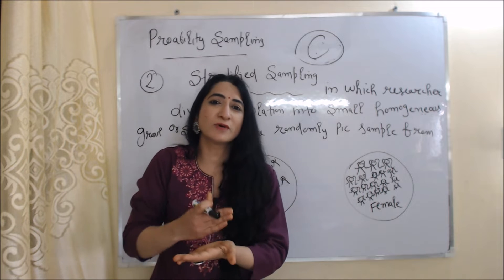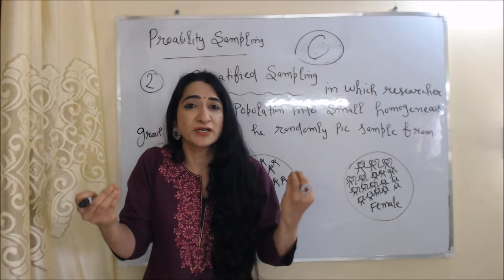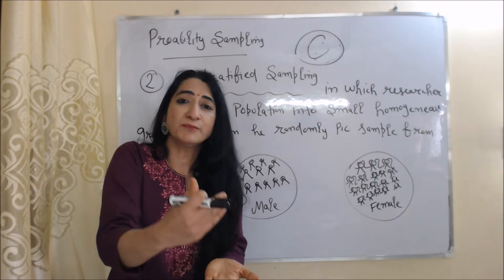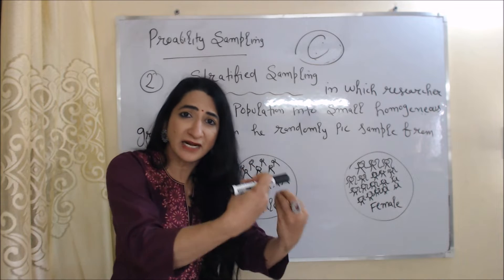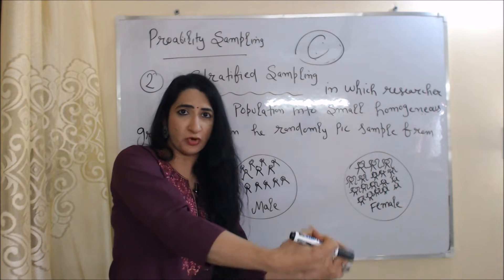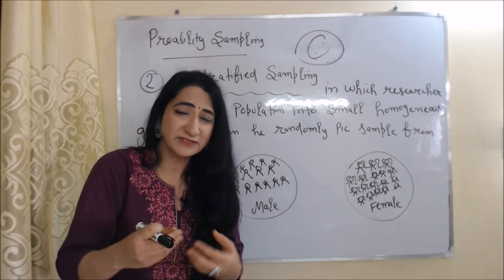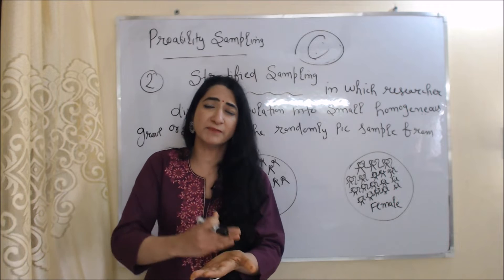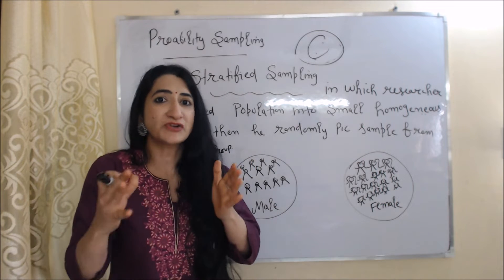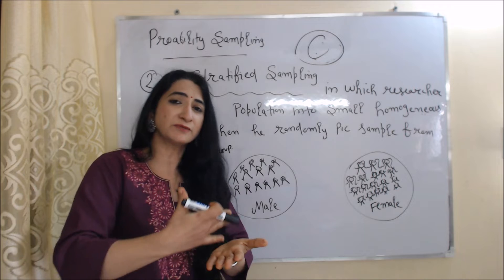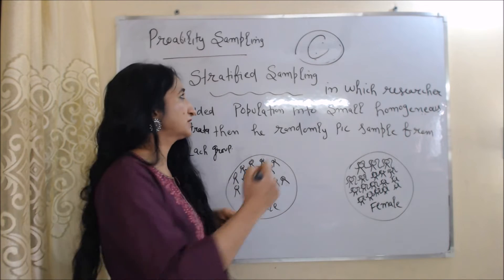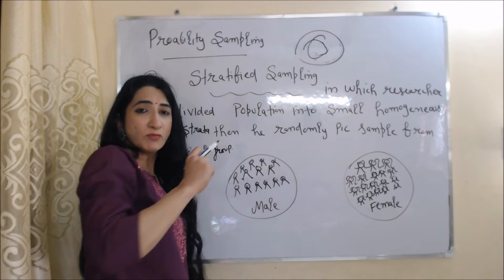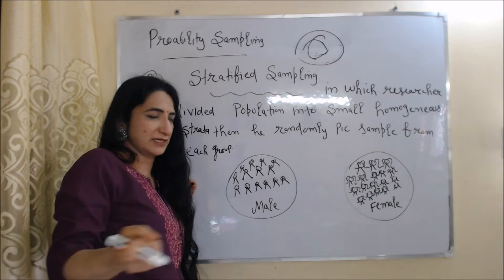Now we are going to talk about the second type of probability sampling: stratified sampling. Stratified sampling is a type of sampling in which researchers divide the population into small homogeneous groups, then randomly pick a sample from each group. These groups are called strata. Homogeneous group means all members share common characteristics — for example, a group in which all people are of the same age.